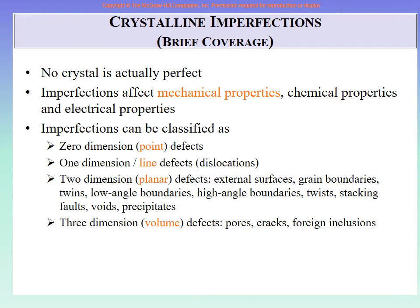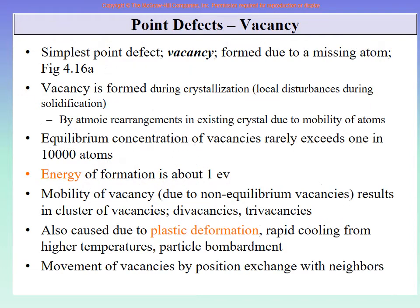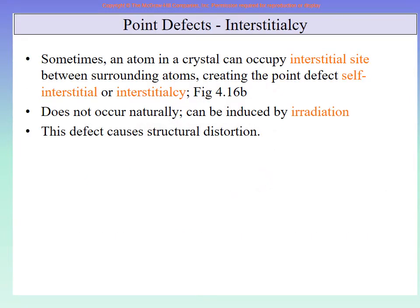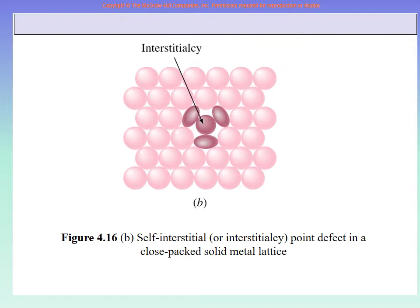Then we covered crystalline imperfections or defects briefly — all the categories: point defects, line defects, volume defects, and so on. We started with point defects; the main one is vacancy, where energy and plastic deformation are important. We also discussed interstitial defects.